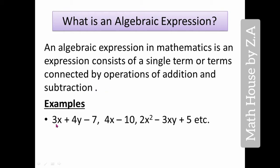As you can see, 3x + 4y - 7, this is an algebraic expression. 3x, 4y, and 7 are the terms, and they are connected with plus or minus. You can have both places with plus, both with minus, or one plus and one minus.